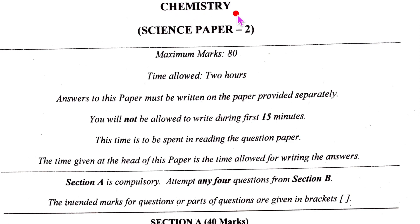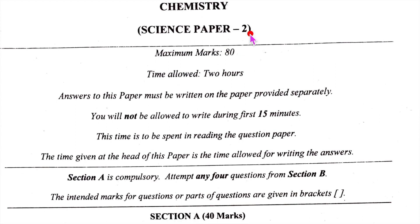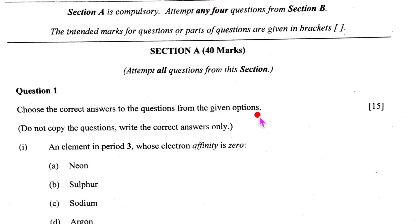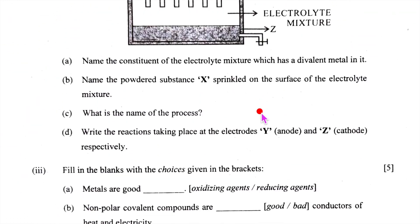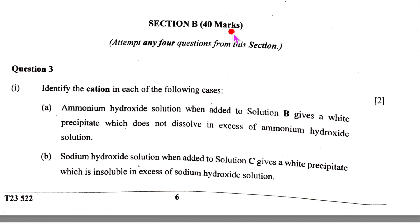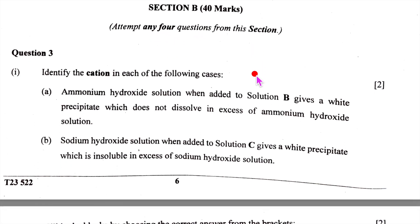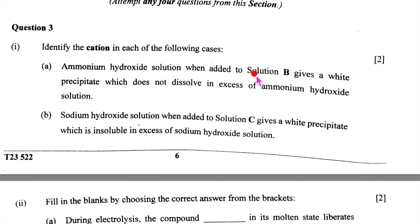This is the ICSE Chemistry Science Paper 2 of the ICSE Examination 2023 — a board examination paper. Maximum marks are 80 and today we are going to see the answer key to Section B. Section A is 40 marks and Section B is also 40 marks, covering questions 3 to 8. There are 6 questions and we have to answer any 4. Let us look at the answer key and solutions from question 3 onwards.